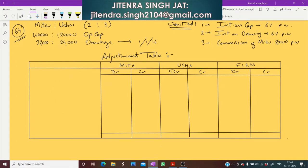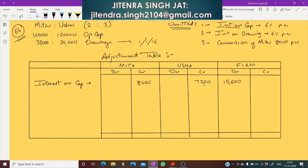Interest on capital at 6% was omitted, so it will be credited to the partners' capital accounts. For Meeta: 1,40,000 × 6% = 8,400 credited to Meeta. For Usha: 1,20,000 × 6% = 7,200 credited to Usha. Total interest on capital = 8,400 + 7,200 = 15,600, which must be debited to the firm.